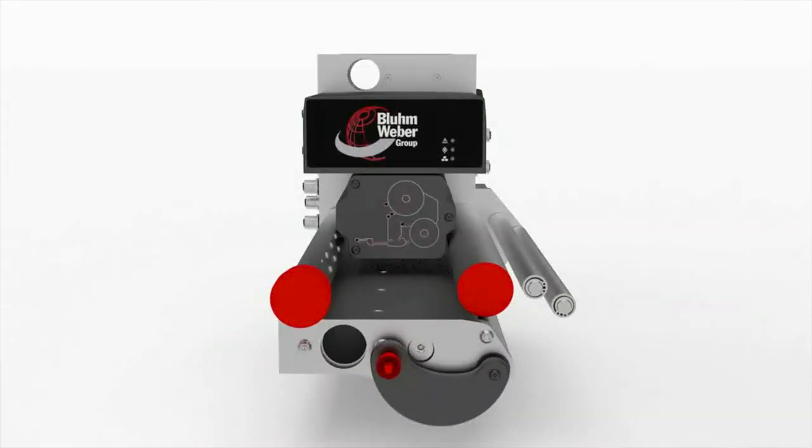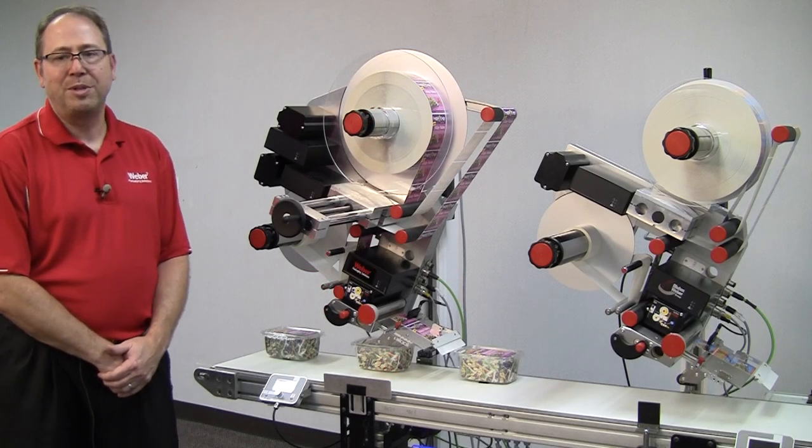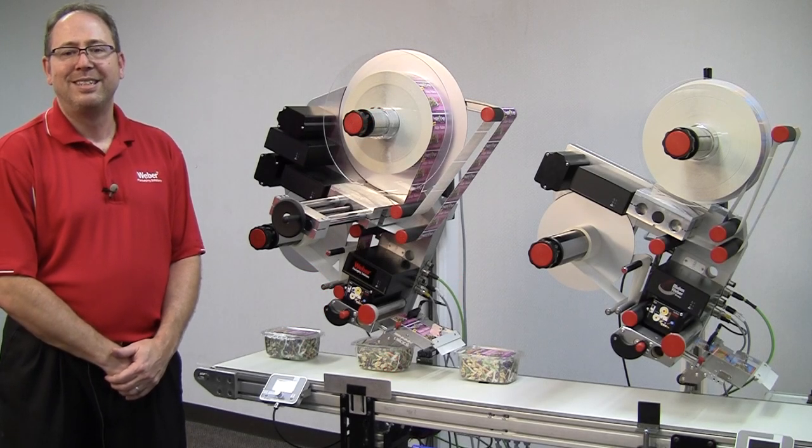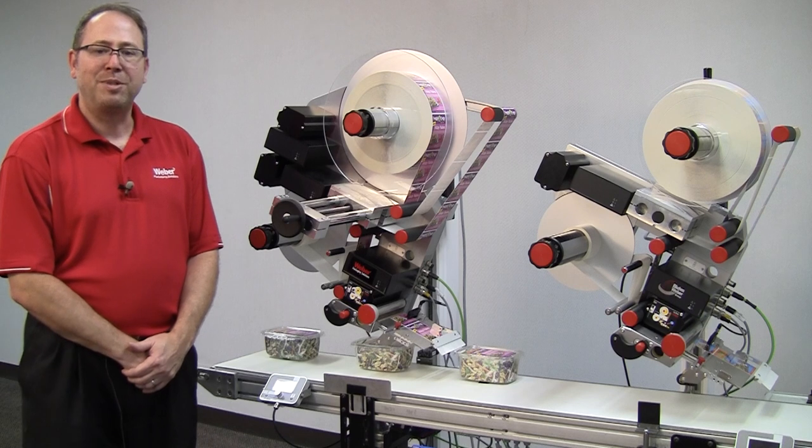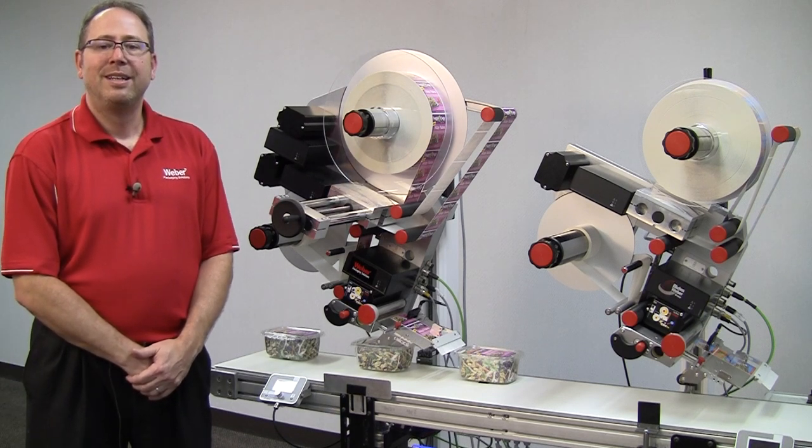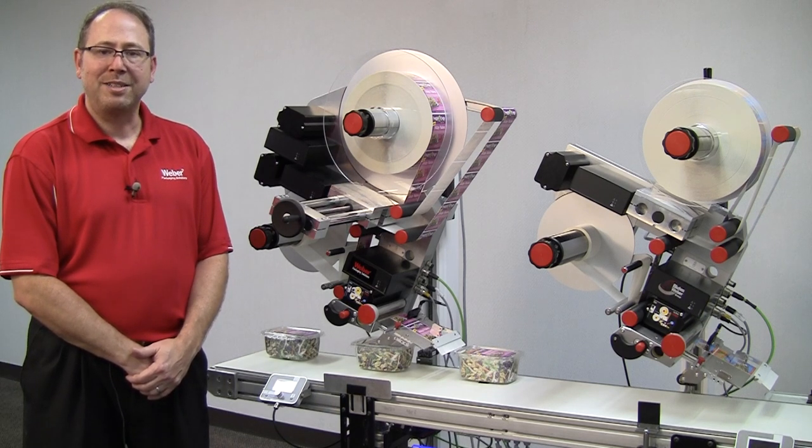Special features of the Alpha HSM include drive speeds up to 150 meters per minute, cycle performance up to 2,000 labels per minute, and label lengths up to 2,000 millimeters.